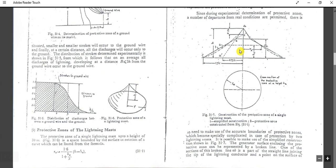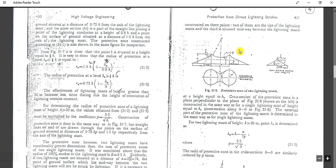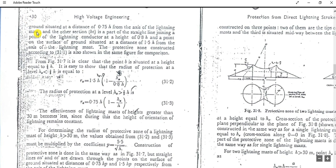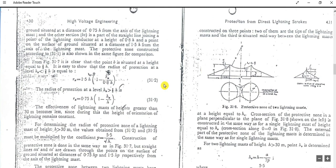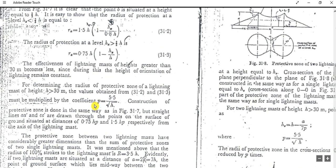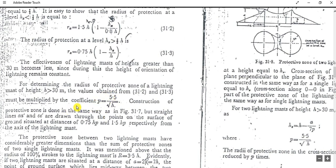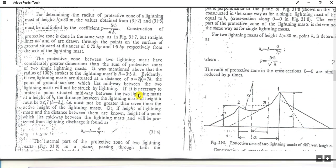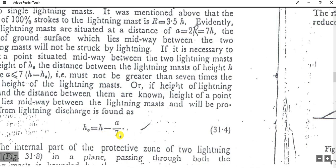This is a little bit complicated, but if you understand the basic theory it will be easier. For determining the radius of the protective zone of a lightning mast of height h greater than 30 meters, the values from these two equations must be multiplied by the coefficient p, which equals 5.5 divided by the square root of h. Also, h₀ equals h minus a divided by 7.